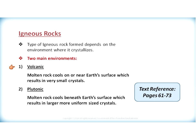The second environment is a plutonic environment. In a plutonic environment, molten rock cools beneath the Earth's surface, resulting in a longer cooling time, which produces larger, more uniform-sized crystals. These crystals can be seen with the naked eye in a hand sample. For references on igneous rocks, we can refer to our textbook on pages 61 to 73.